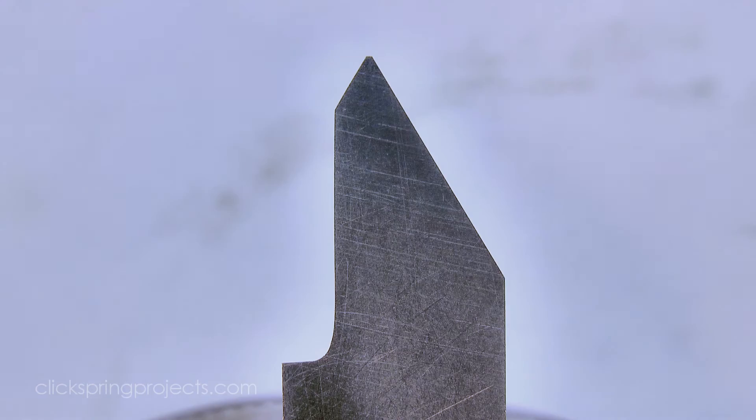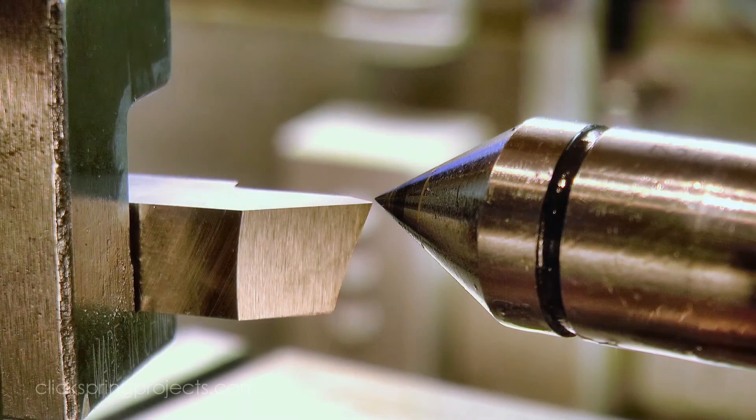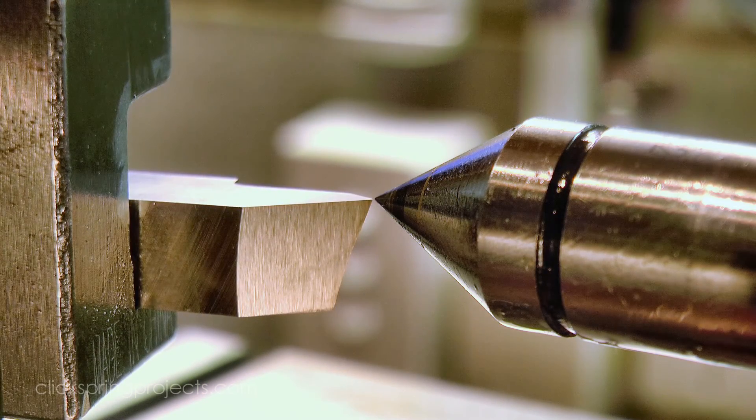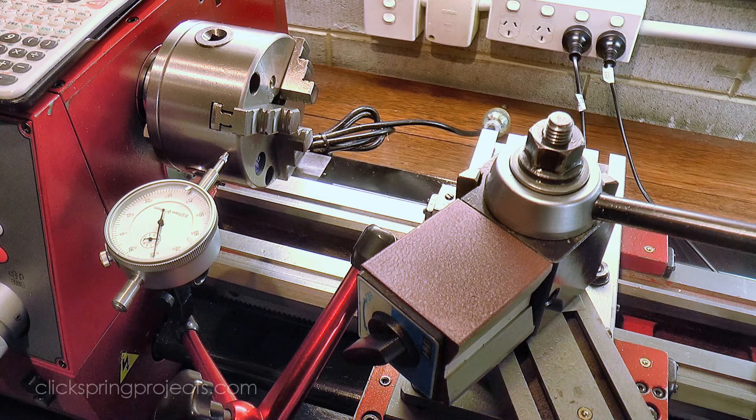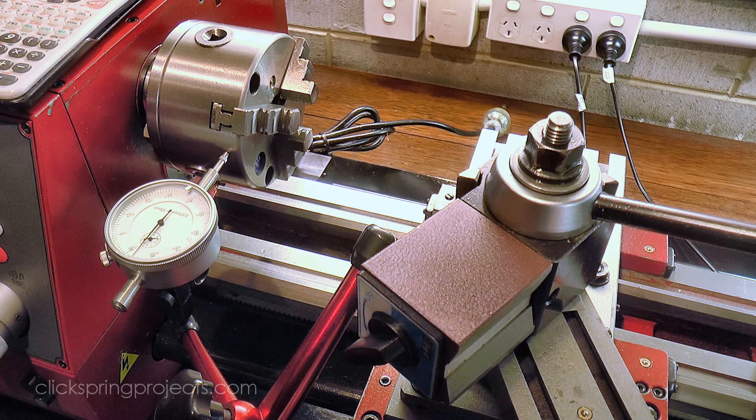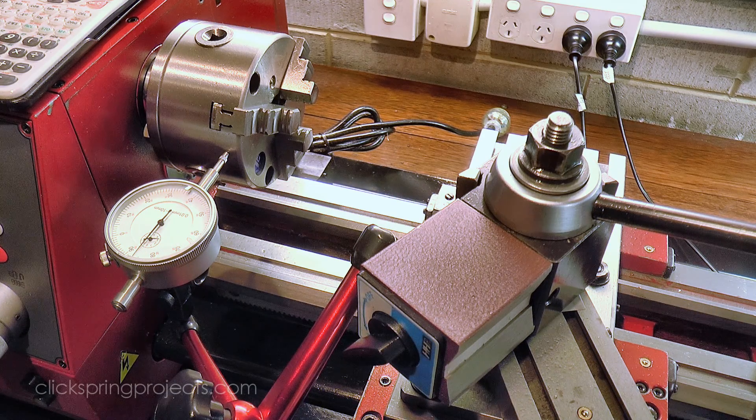The tool needs to be adjusted in the tool holder to be on center, and the top slide needs to be set to just under 30 degrees. And I definitely can't rely on the graduated scale for this, so I'm setting it exactly using a dial indicator, with the side of the 3 jaw chuck as my reference surface.